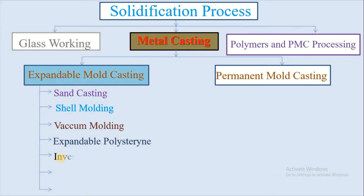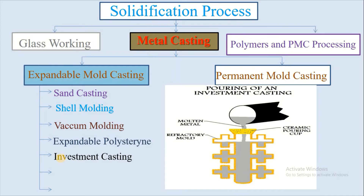The next expandable mold casting process is investment casting, also known as precision casting or lost wax casting. It is a manufacturing process in which a wax pattern is used to shape a disposable ceramic mold. The wax pattern is made in the exact shape of the item to be cast, then coated with a refractory ceramic material. Parts made by investment casting include turbine blades, medical equipment, firearm components, gears, jewelry, golf club heads, and many other machine components with complex geometry.